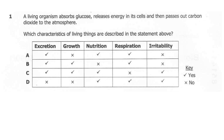The correct answer for question number 1 is A. We have excretion taking place, which is passing out of carbon dioxide. Then we have nutrition, which is the absorption of glucose. Then we have respiration, which is the release of energy in its cells. So the correct answer is A.